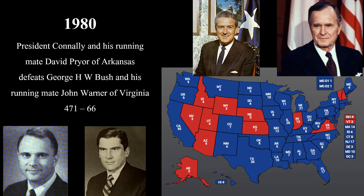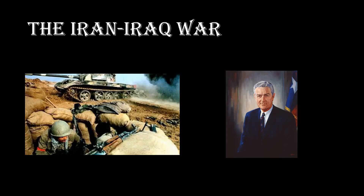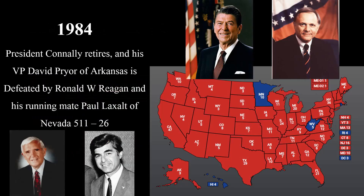The biggest issue of the day is the war between Iran and Iraq. In this conflict, the United States under President Connolly supports Iraq, and by election day 1984, Iraq is on the verge of winning. However, the war is also extremely unpopular among large parts of the American electorate, and in the presidential election of 1984, former California Governor Ronald Reagan defeats Vice President David Pryor.